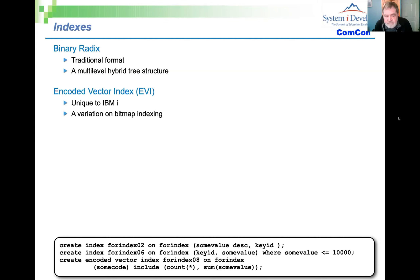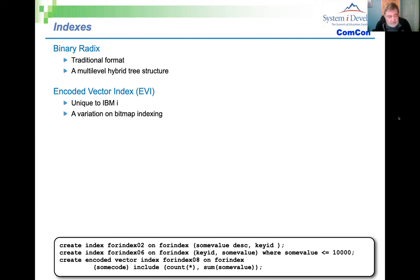The second type is an EVI — an encoded vector index — which is a variation of bitmap indexing. This implementation of bitmap indexing is unique to IBMi; you get it nowhere else. The main place we use EVIs is when we have low cardinality in a table, meaning a column where regardless of how many rows there are, there are very few distinct values. An excellent example would be a state code in the US — if you're Amazon with millions of customers, there are only 50 possible values for state: lots of rows but low cardinality.